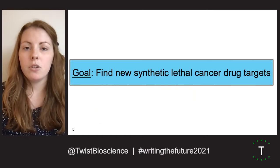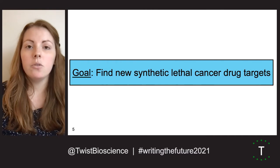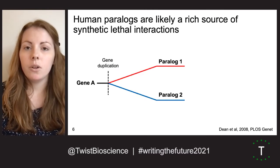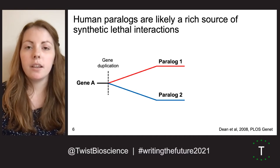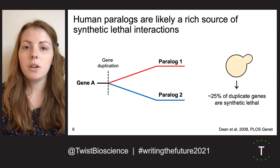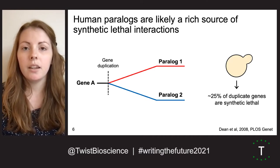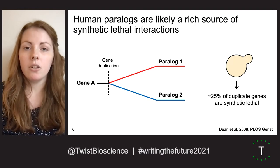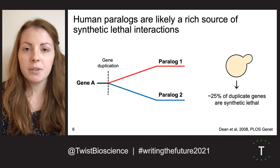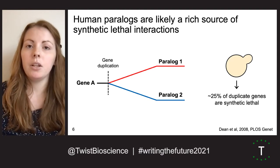The goal of my project was to identify new synthetic lethal cancer drug targets. To do this, we decided to focus on paralogs, which are genes that arose as a result of a duplication event and often retain overlapping or redundant functions. Studies in the eukaryotic model organism yeast have shown that up to 25% of duplicate gene pairs exhibit synthetic lethality. Compared to genetic interaction mapping of unrelated human genes, which has a hit rate of less than 0.1%, we figured paralogs were a pretty good place to start.